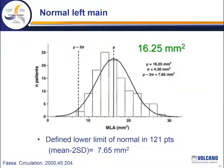It's important to know what a normal left main should look like. The group in Rochester, Minnesota looked at 121 patients with normal left main coronaries and measured the IVUS cross-sectional area, finding that the mean is over 16 square millimeters and the lower limit of normal — mean minus two standard deviations — is about 7.65 square millimeters, just over a three-millimeter diameter vessel. Normal left mains are about five to six millimeters in diameter, and the lower level of normal is larger than three millimeters in diameter.